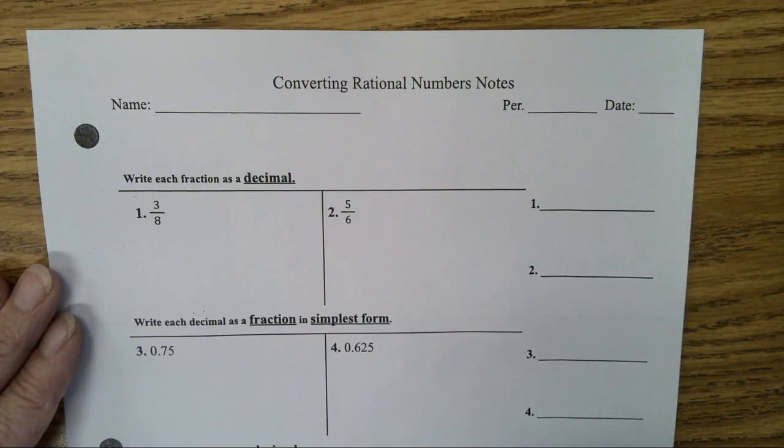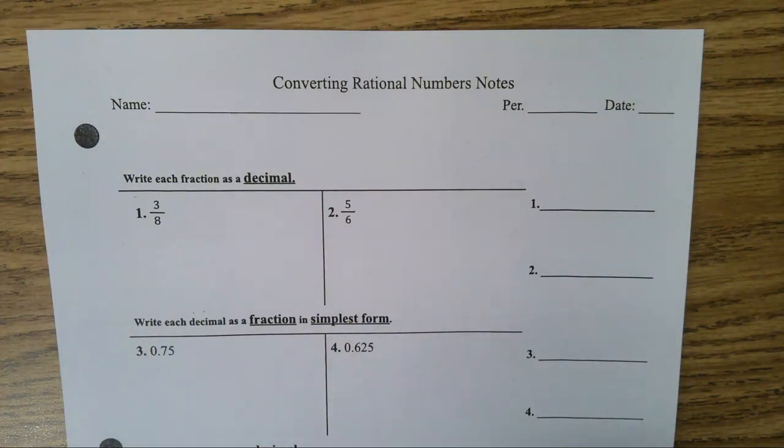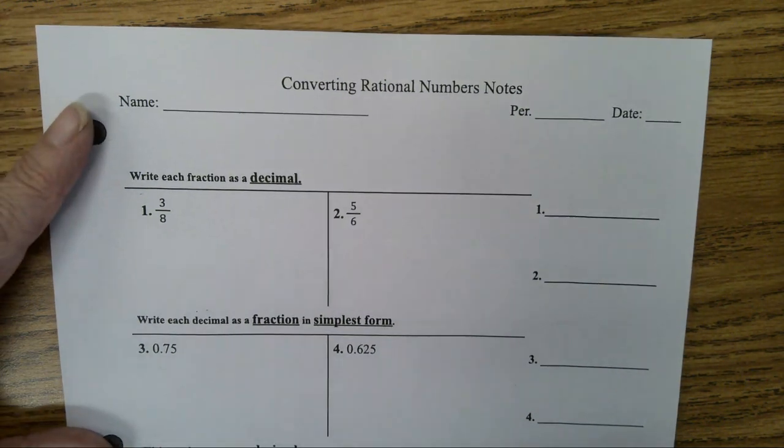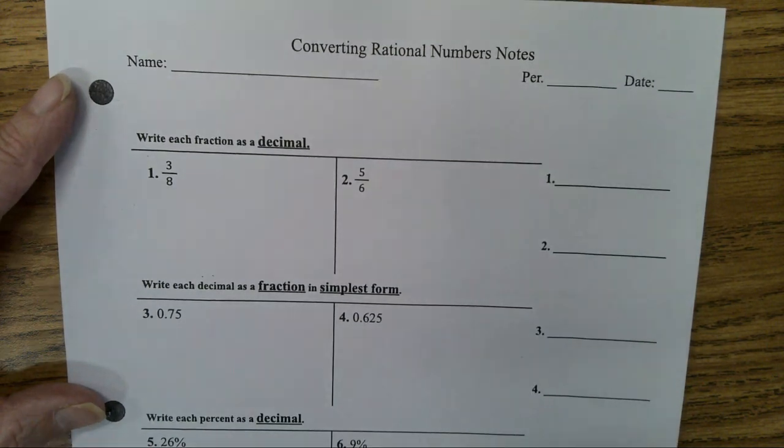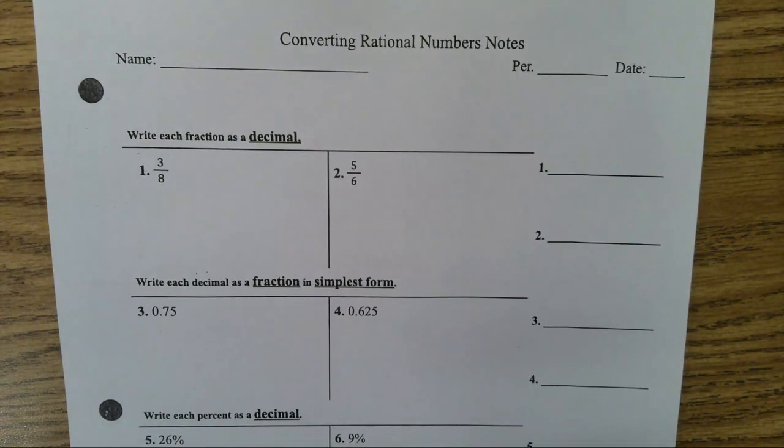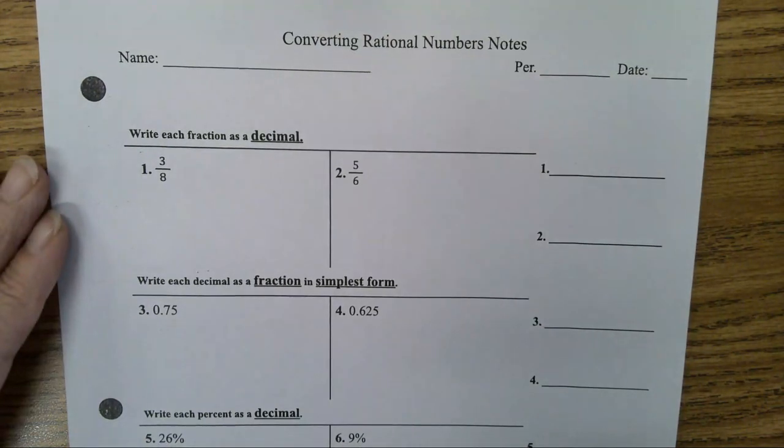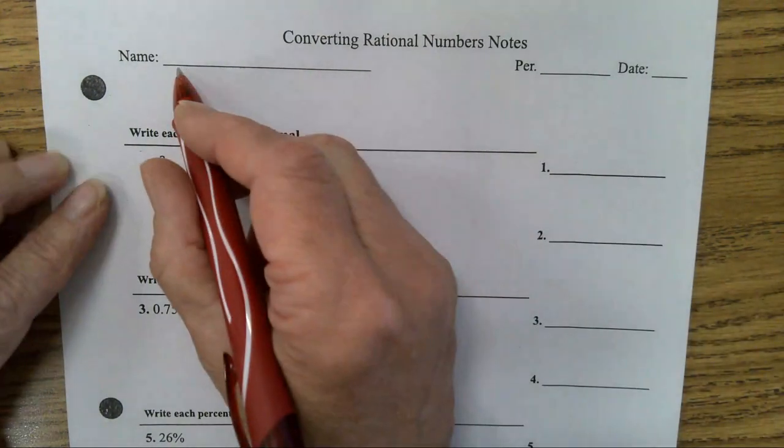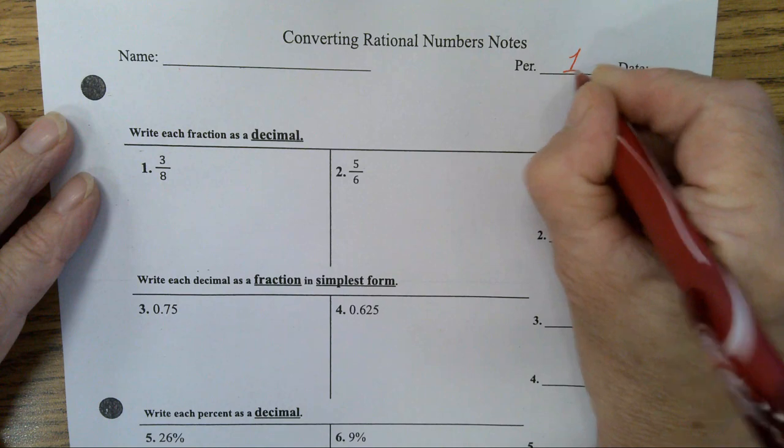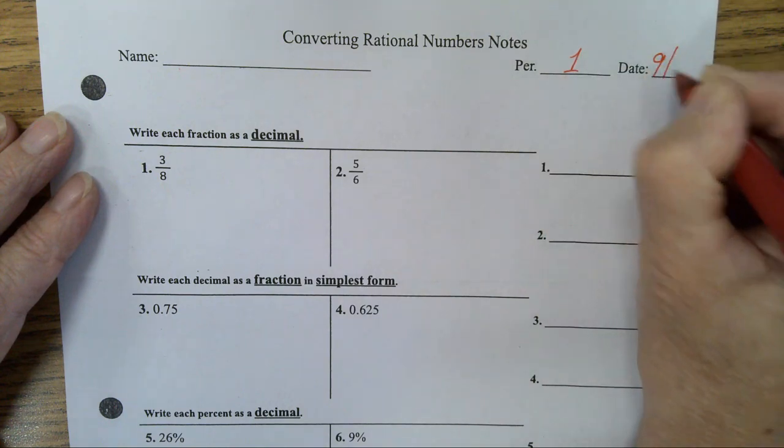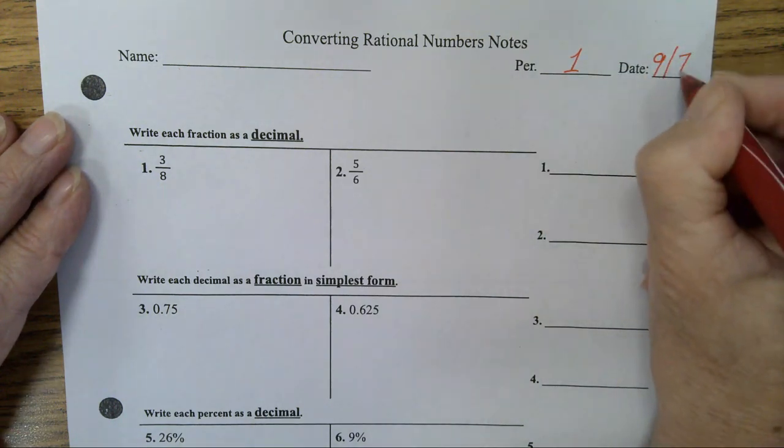Hi, this is Mrs. Robertson, and today is Tuesday, and we are going to be working on reviewing for our test. It's Converting Rational Numbers Day. Here are our notes to go over this. These notes go along with what we were studying in Chapter 2. All right, so let's make sure you put your name. This is period 1, and the date on your paper.